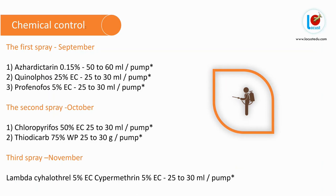Chemical control: First spray in September — Azadirachtin, Quinalphos, Profenofos. Second spray in October — Chlorpyrifos, Tridichlor. Third spray in November — Lambda-cyhalothrin, Cypermethrin.